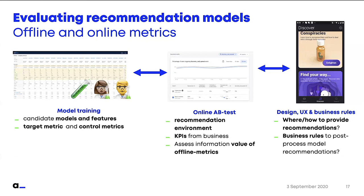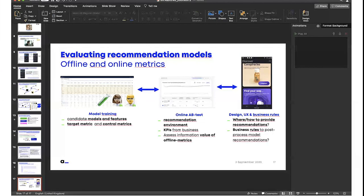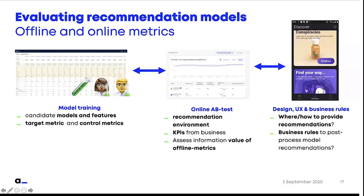Last but not least, these things come together in online AB tests, where you can actually measure performance in the real recommendation environment, taking into account the business KPIs. This AB test is the part that lets you learn about the value of your offline metrics. Having iterations between model training and online AB tests is important to learn how to choose good offline metrics as well.